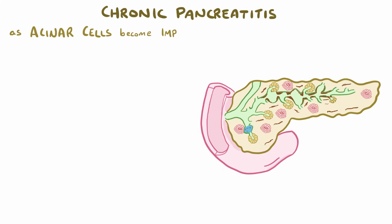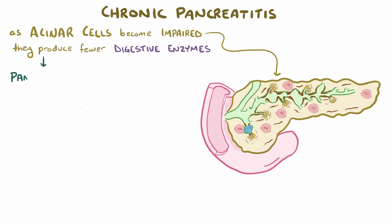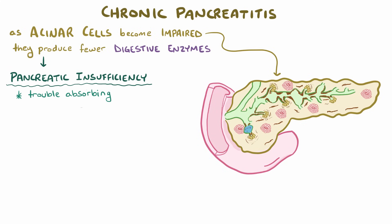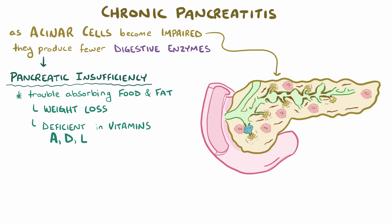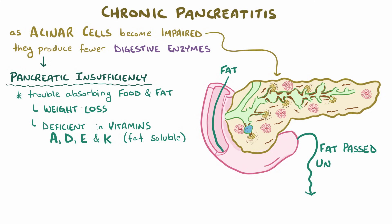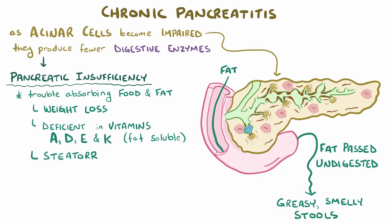As the acinar cells become impaired, they produce fewer pancreatic digestive enzymes, which results in pancreatic insufficiency. These individuals can have trouble absorbing foods and dietary fats, often lose weight, and even develop a deficiency in vitamins A, D, E, and K, which are fat-soluble vitamins. Without digestive enzymes, fat might pass right through the intestines undigested, leading to greasy and smelly stools, called steatorrhea.